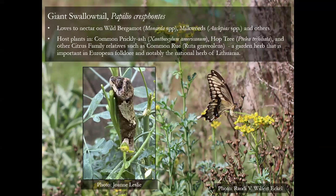The first giant swallowtail I ever saw in New Jersey was, very sadly, dead in my front yard — hit by a car. I couldn't imagine where this giant butterfly had come from. We do get them every year now coming to the garden, and I have both common prickly ash and hop tree now growing on the farm as well, so they don't need to simply rely on the European herb they will also feed on.